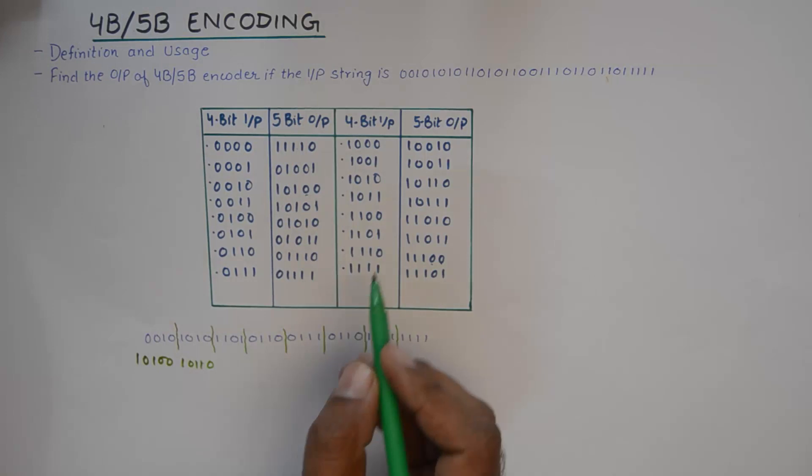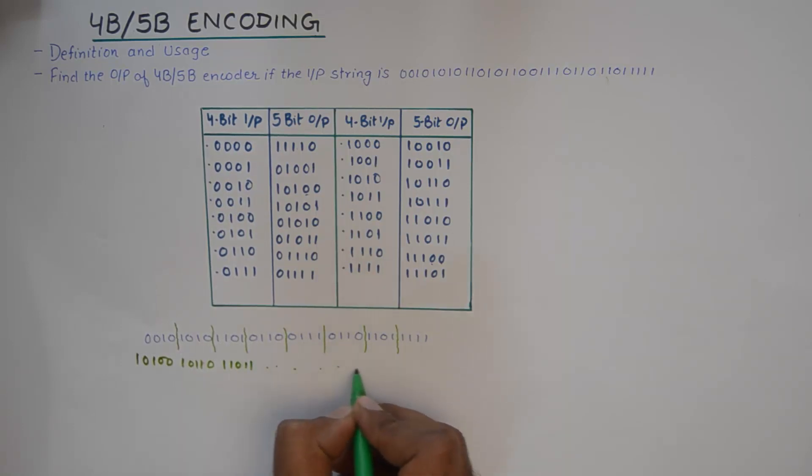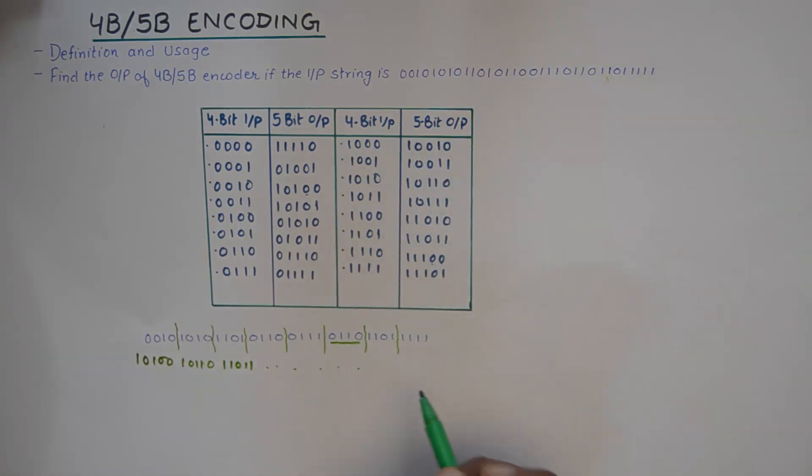1101 will result in 11011 and so on. So you keep on substituting the value of these 4-bit inputs from this table and the output is